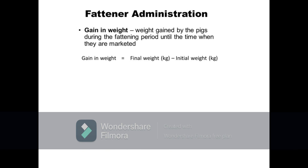Next parameter is gain in weight. This refers to the increase in weight of the fattener from the start until the end of the fattening period. It is calculated as the difference between the initial weight at the start of the fattening period and the final weight or market weight at the end of the period. For example, a fattener that has an initial weight of 15 kilograms and weighs 100 kilograms at the end of the fattening period has a gain in weight of 85 kilograms.